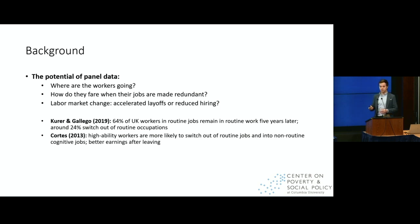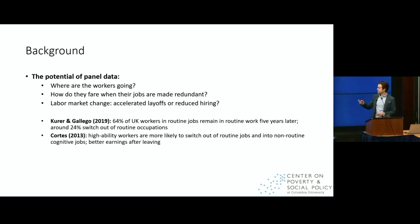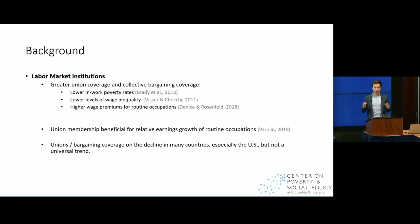There are a couple of papers already using panel data to answer these questions. In the British case, Thomas Kerr and Anne Gallego find that about 64% of British workers in routine jobs remain in that routine occupation five years later — a pretty small group is switching out, and very few are unemployed five years later. Interestingly, most individuals who transition out of routine jobs are not moving to lower-paid service sector jobs, but are in fact moving to higher pay or higher status jobs. Matias Cortez finds something similar — that high-ability workers are more likely to switch out of routine jobs and tend to fare better over time if they do. What I'm going to add is a focus on labor market institutions and worker power.